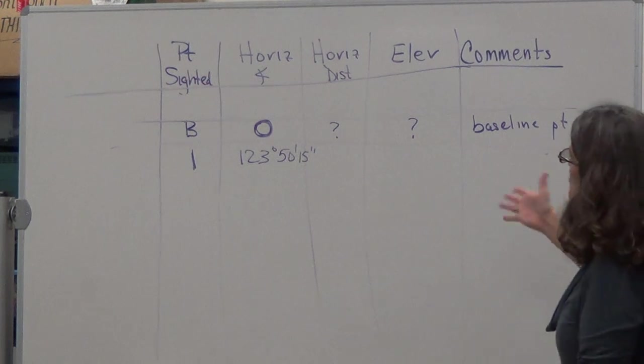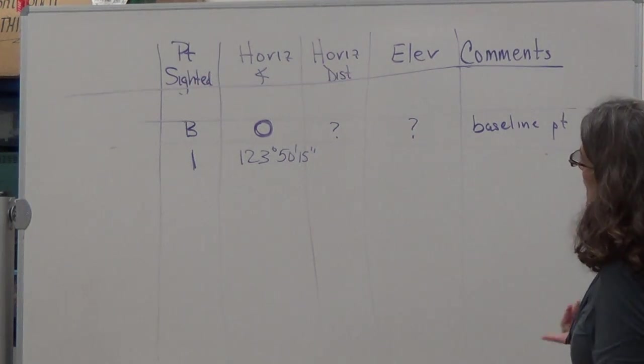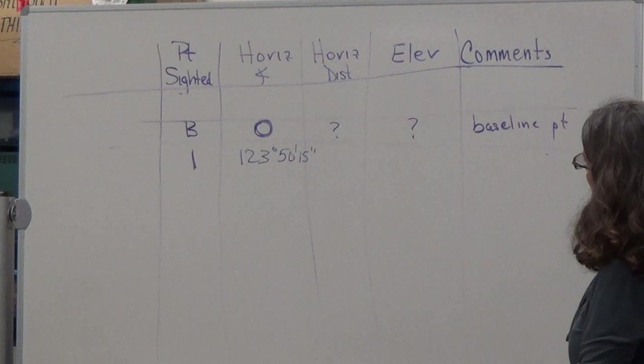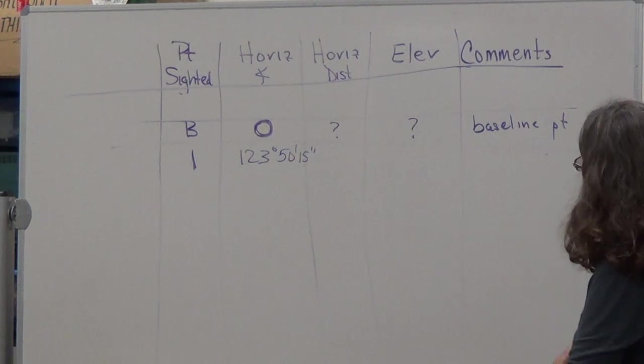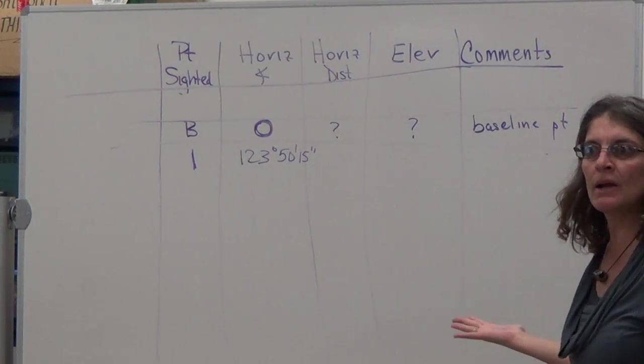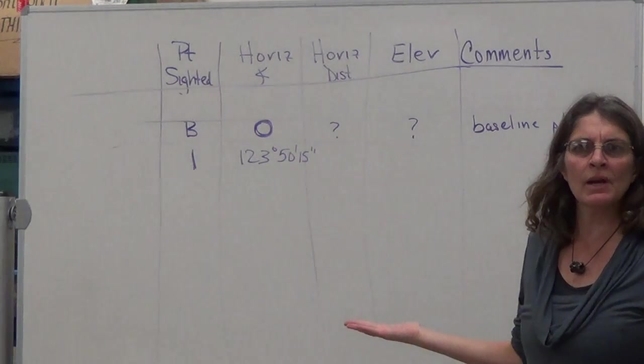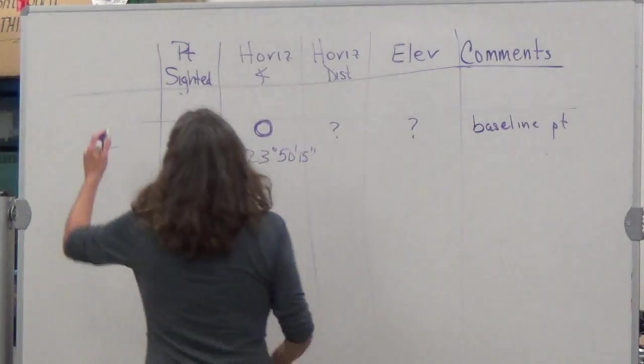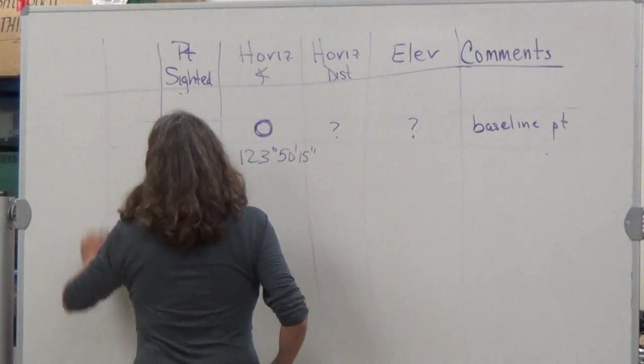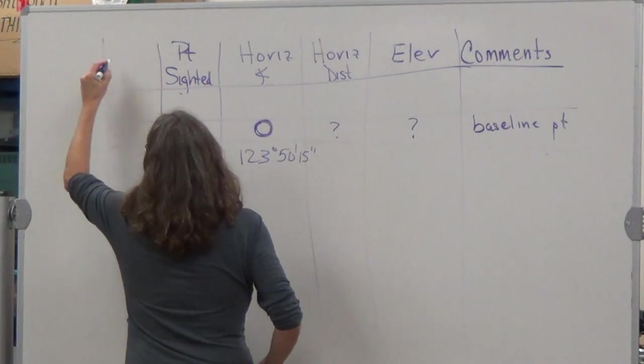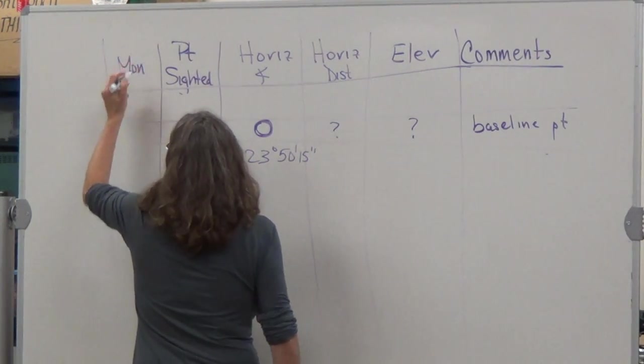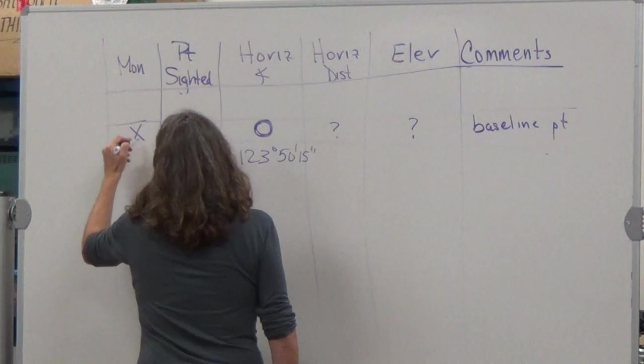So we're thinking now, do we need any more information? I think we got point sighted, horizontal angle, horizontal distance, elevation, comments. That's five. I don't think we need anything else. So we can make that first point. We can make that first column, the point that we're at. So what did they usually call it, monument, right? So you're set up on point X.